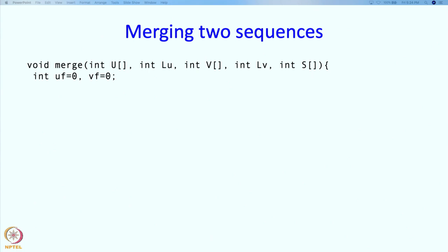UF and VF are the positions of the fronts. Initially the front is at the 0th index here and the front of V is also at the 0th index. We need an element for the back but that will be a part of our main loop.